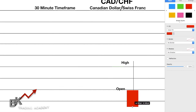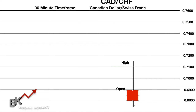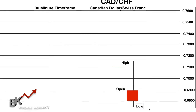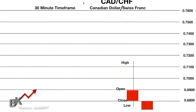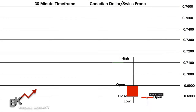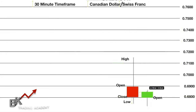As price pulls up a bit — still within the 30-minute time frame — a wick begins to form at the bottom. We mark that 'Low' because it's the lowest price has been within the 30 minutes. When the 30 minutes is up, price closes at the bottom of that candle — it closed at 0.68. Right when it closes, a new candle begins to form.